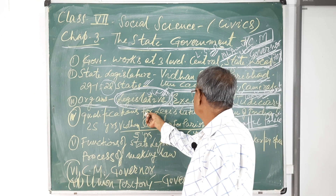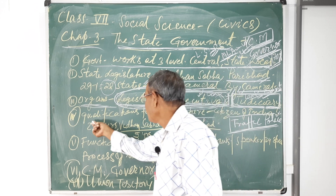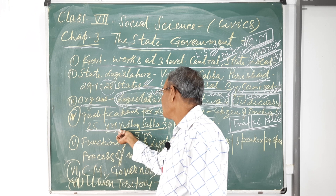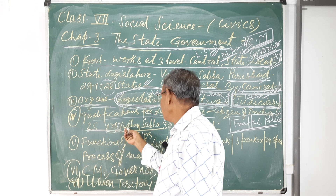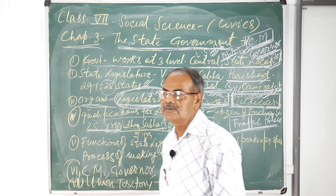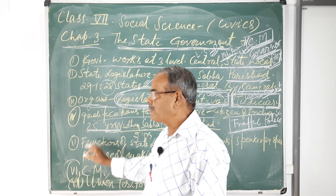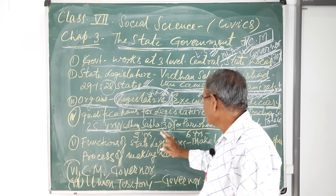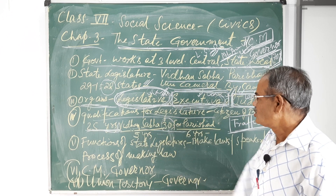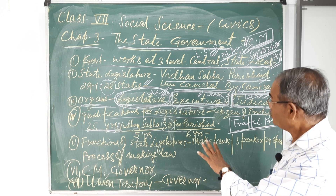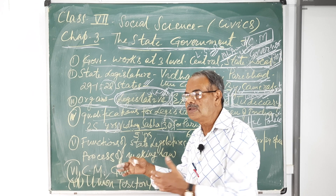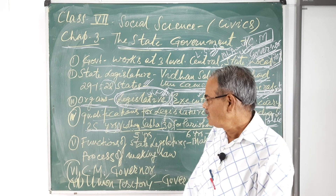Now, the qualifications: for MLA, the age is 25 years. But for MLC, it will be 30 years. If we are not matching these qualifications, we cannot contest the election.